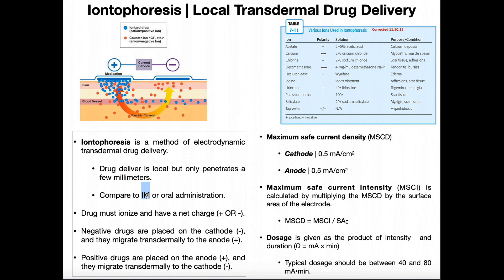Compare that to an intramuscular injection or oral administration. In oral administration, you take a drug by mouth, it goes through the digestive system, and when it gets to the small or large intestine it gets absorbed into the bloodstream — with really no control over where that drug goes. In an intramuscular injection, injecting into a muscle tends to decrease the rate it spreads throughout the body, but again you can't necessarily control where it goes. One of the nice things about iontophoresis is that if you're dealing with a superficial tissue and only want the medication to go to that area, it's a good technique — it will stay in the area between those two electrodes.